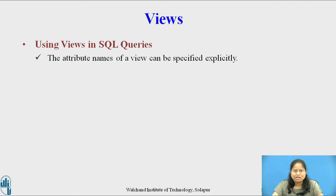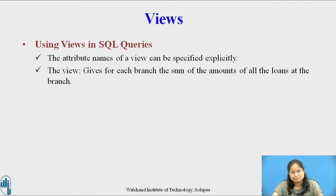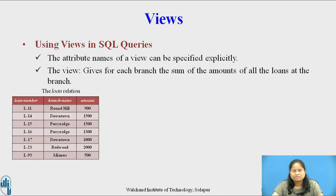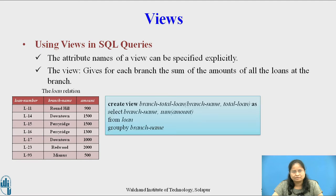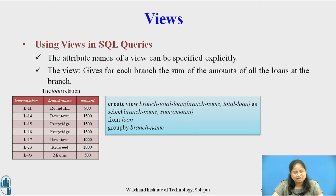The attribute names of a view can be specified explicitly. Consider a view definition that gives, for each branch, the sum of the amount of all loans at that branch. For this view, the relation loan is required. The view definition is: CREATE VIEW branch_total_loan(branch_name, total_loan) AS SELECT branch_name, SUM(amount) FROM loan GROUP BY branch_name. Since the expression SUM(amount) does not have a name, the attribute name is specified explicitly in the view definition.